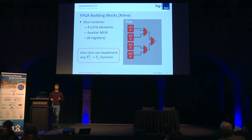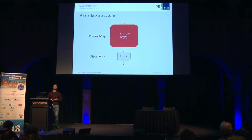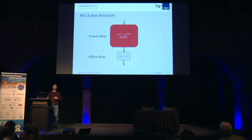Enough of the basics — let's apply that. We are looking at the AES S-box. To recall, we are thinking about inversion in a finite field, which can be represented as a power map with exponent 254. There is also an affine function, but we can easily integrate that somewhere in our hardware structure. So let's just think about the power map itself as the AES S-box.